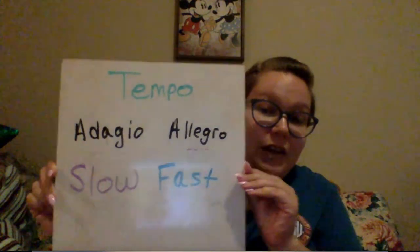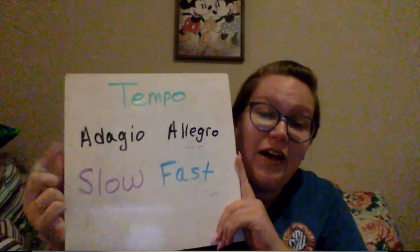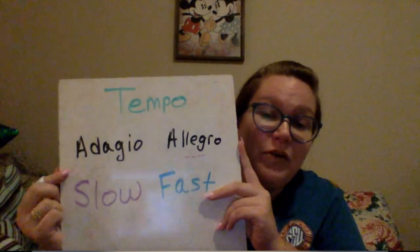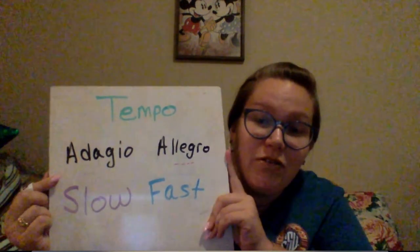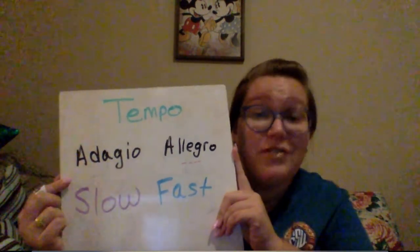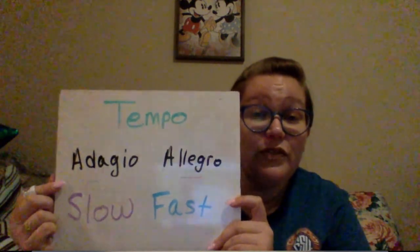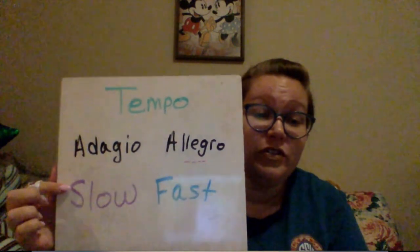So we're going to talk about two tempos today. We're going to talk about adagio, which is slow, and allegro, which is fast. The way I remember is by looking at allegro — what word is in allegro? Leg. And don't you need your legs to run fast? Of course you do. So allegro means fast and then adagio means slow.